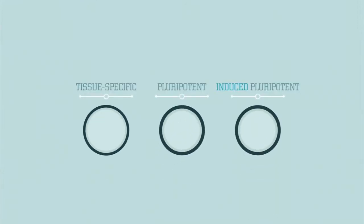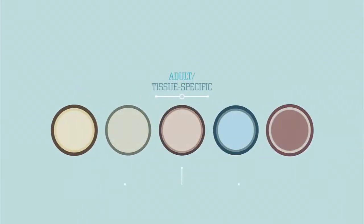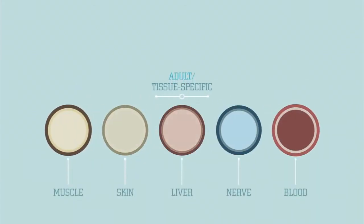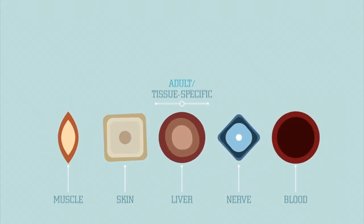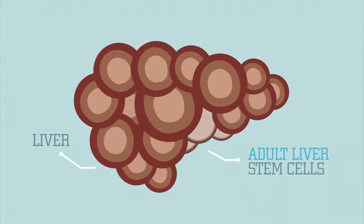There are actually multiple kinds of stem cells that scientists can use for medical treatments and research. Adult stem cells or tissue-specific stem cells are found in small numbers in most of your body's tissues. Tissue-specific stem cells replace the existing cells in your organs as they wear out and die.